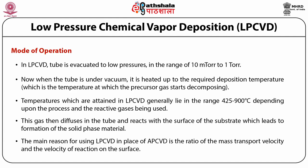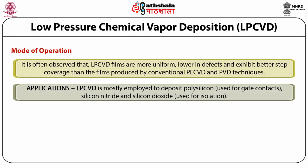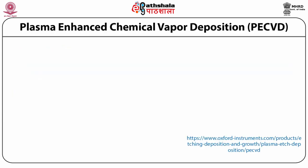The main reason for choosing LPCVD over APCVD is the ratio of the mass transport velocity and the velocity of reaction on the surface. LPCVD films are more uniform, have lower defects, and exhibit better step coverage than films produced by conventional PECVD and PVD techniques. LPCVD is mostly employed to deposit polysilicon used for gate contacts, silicon nitride and silicon dioxide used for isolations. LPCVD films offer good conformal step coverage and good sidewall protection.